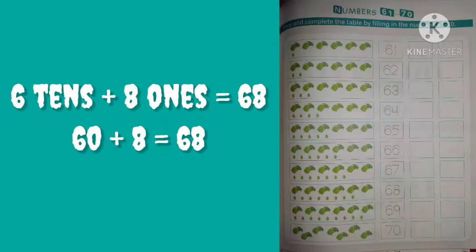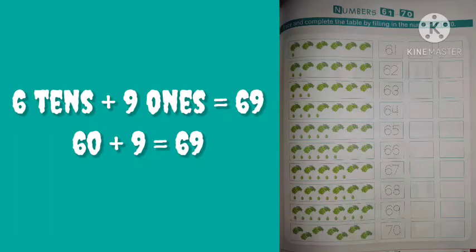In the next box, 6 tens and 8 ones. 6 tens and 8 ones is equal to 68 — that means 60 plus 8. In the next box, 6 tens and 9 ones, that means 60 plus 9, and 60 plus 9 is equal to 69.